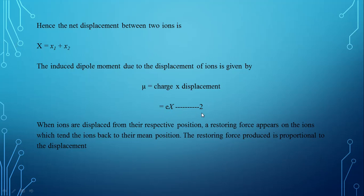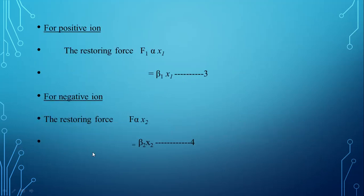Consider this as equation number 2. When the ions are displaced from their respective positions, a restoring force appears on the ions, which tends to bring them back to their mean position. The restoring force produced is proportional to the displacement. For the positive ion, the restoring force F1 is proportional to displacement x1, and the proportionality is removed by the constant beta 1. Name it as equation number 3.